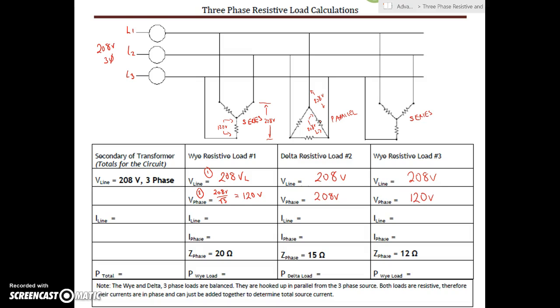Now, the next step we need to do is find our phase current. So we're going to break each of these three phase circuits down into just a simple Ohm's Law equation. Here we have 120 volts divided by 20 ohms. That's going to give you 6 amps. Here we've got 208 volts on the phase divided by 15 ohms.